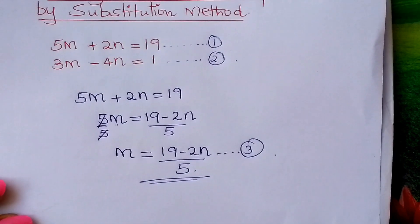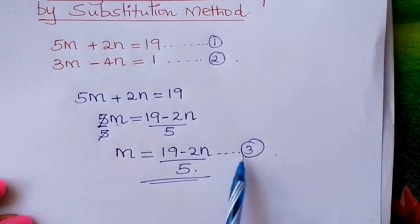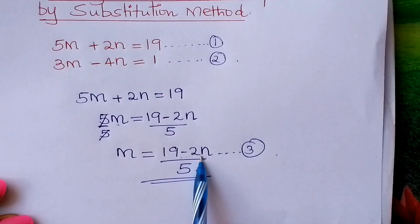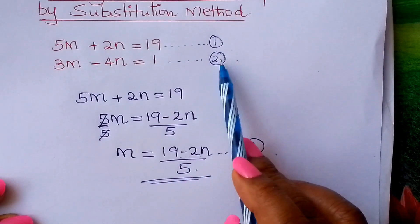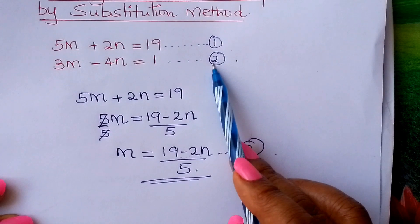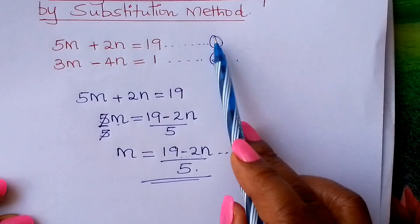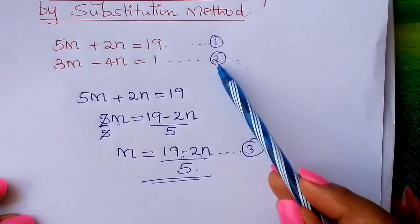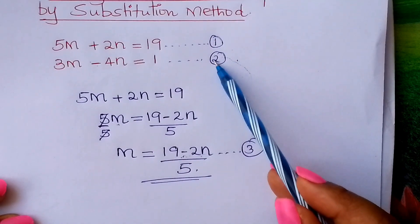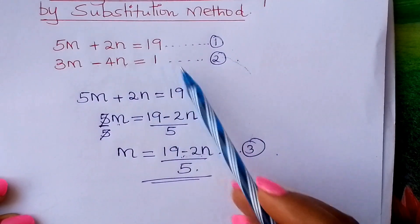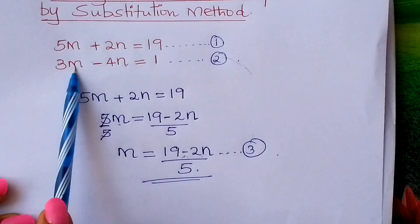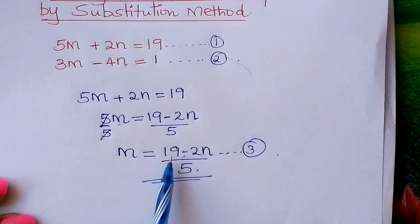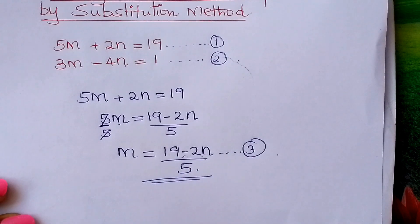From here, you now go and substitute this m into the other equation — that is equation 2. Don't substitute it in the first one. Substitute it in equation 2. So where you have m, you fix 19 minus 2n over 5.